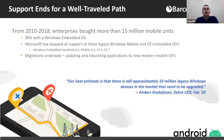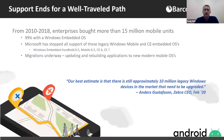After 15 years or so, device hardware incrementally changed but the Windows Mobile and CE platforms remained largely constant. From 2010 to 2018, enterprises bought more than 15 million mobile units running Windows Embedded CE7 and Windows Embedded 6.5. The last iterations were released in 2010 and 2011 respectively, with mainstream support ending in 2013 and 2015 — so like the migration from DOS to Windows, migration became necessary.